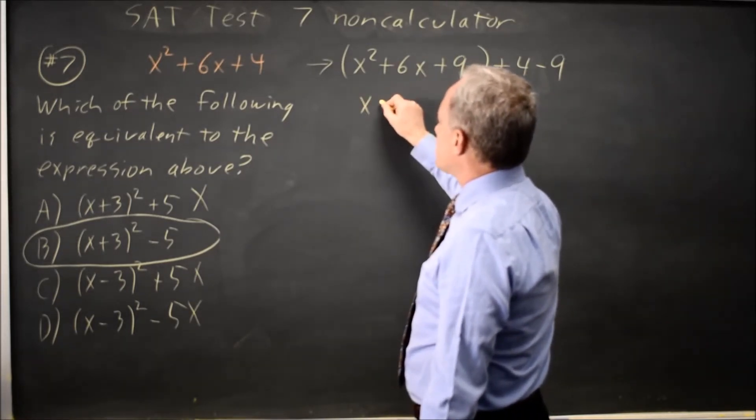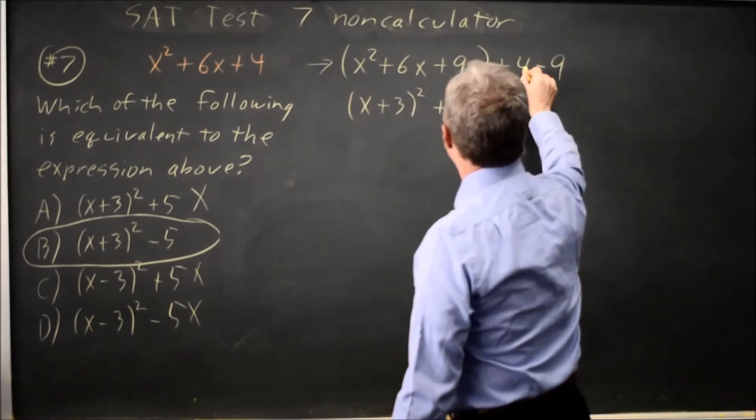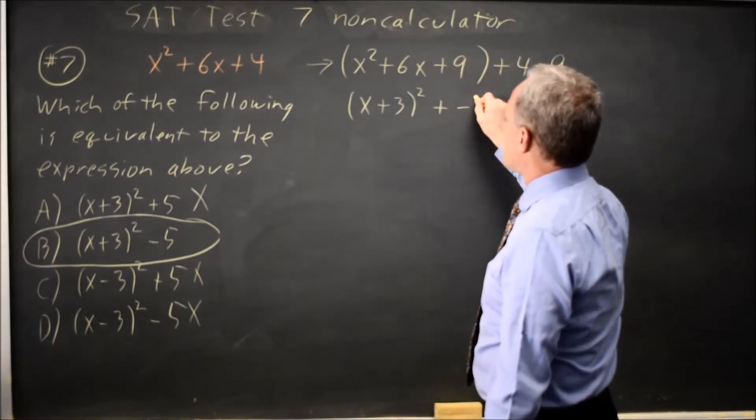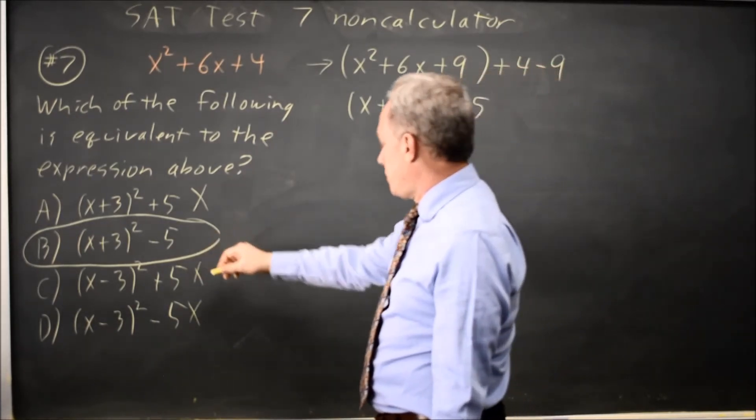x squared plus 6x plus 9 is x plus 3 quantity squared. And then 4 minus 9 is negative 5. So this is choice b.